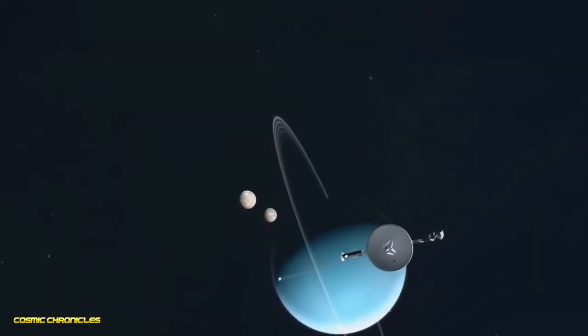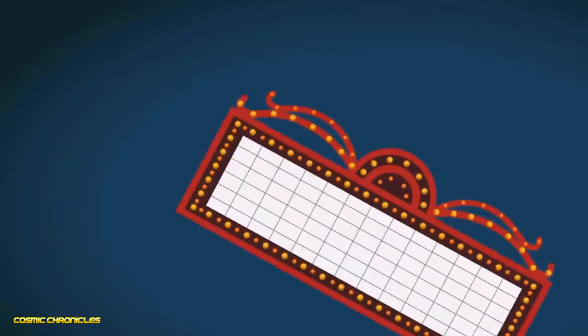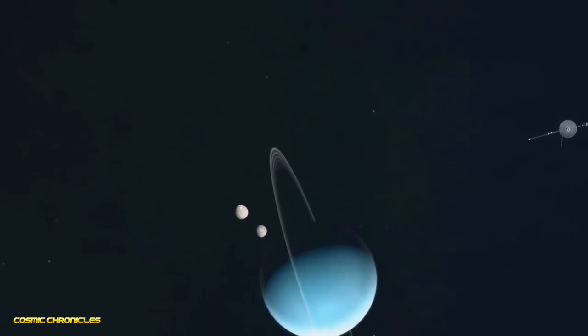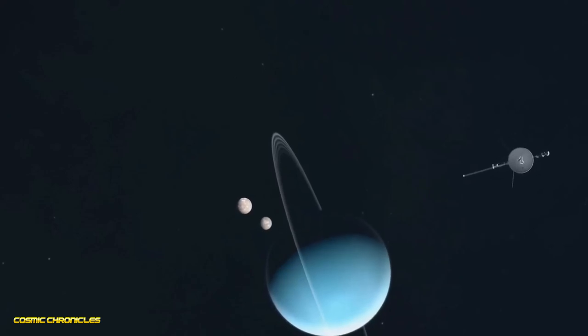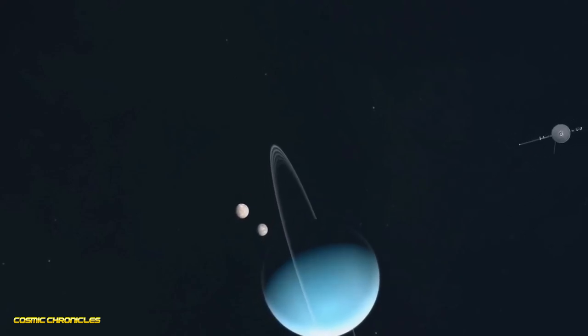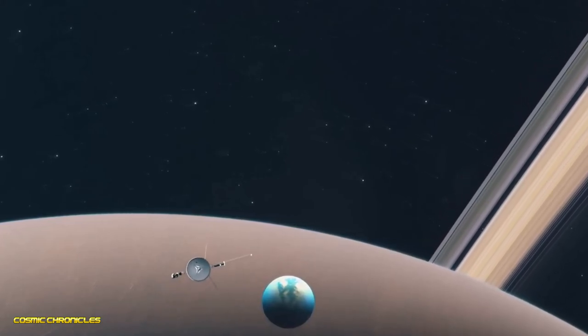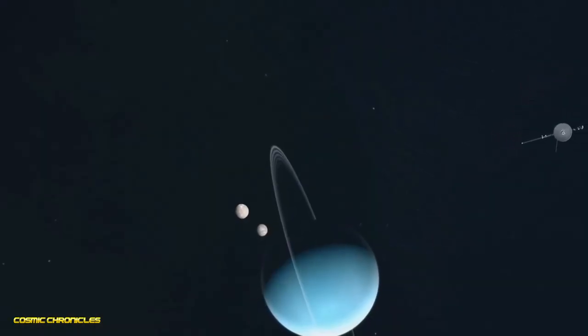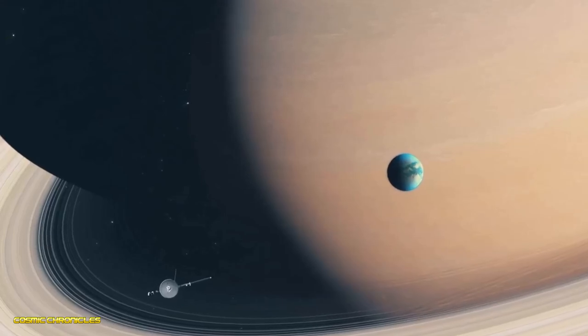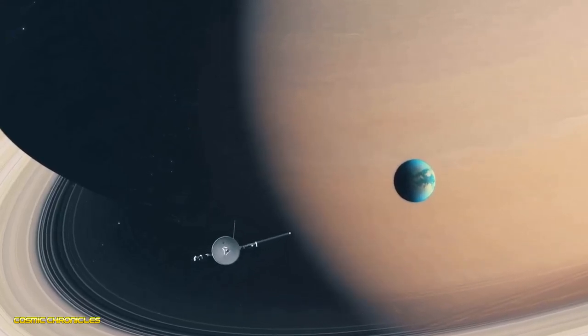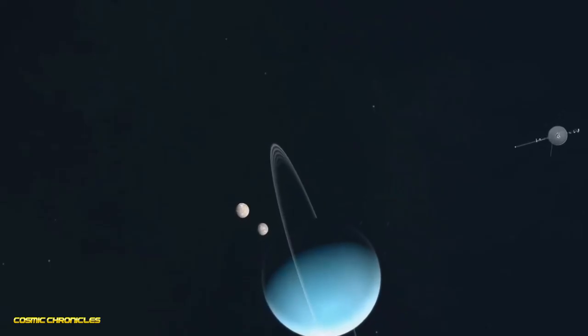The year was 1977. Disco was booming, Star Wars was on the big screen, and humanity launched two spacecraft on an audacious mission. Their names were Voyager 1 and Voyager 2, their destination the outer solar system and beyond. These weren't just any probes - they were designed to be our eyes and ears in unexplored territories, carrying cameras, instruments, and a message for any life forms they might encounter.